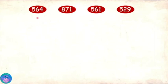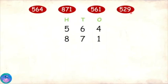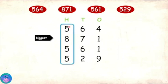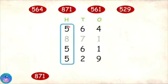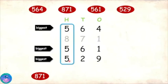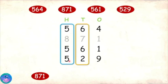All right, sure! The four numbers are: 564, 871, 561, and 529. I have written them one under the other and we'll start comparing the hundreds digits. 8 is the biggest, so 871 is the biggest number. We have three numbers left and all have 5 in the hundreds place, so we'll have to check the tens digits.